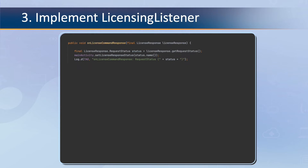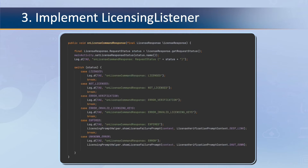A basic implementation of the LicensingListener interface is as follows. This code logs the return status of the license, which can be: licensed, not licensed, error verification, error invalid licensing keys, expired, or unknown error. For a detailed description of each of these statuses, please check the documentation — the link can be found in the description below.